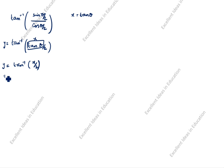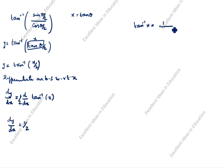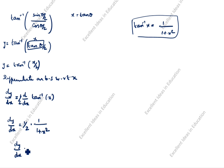Now we differentiate both sides with respect to x. Differentiating y equals (1/2) tan inverse x, the constant 1/2 comes out. Using the formula d/dx of tan inverse x equals 1 over (1 plus x squared), the answer is: dy by dx equals 1 divided by 2(1 plus x squared).